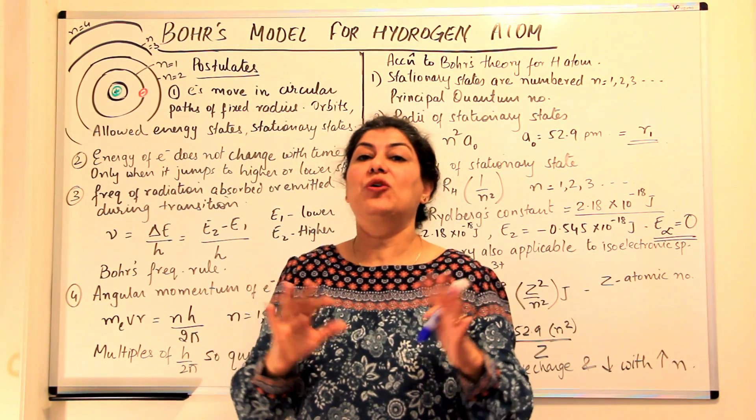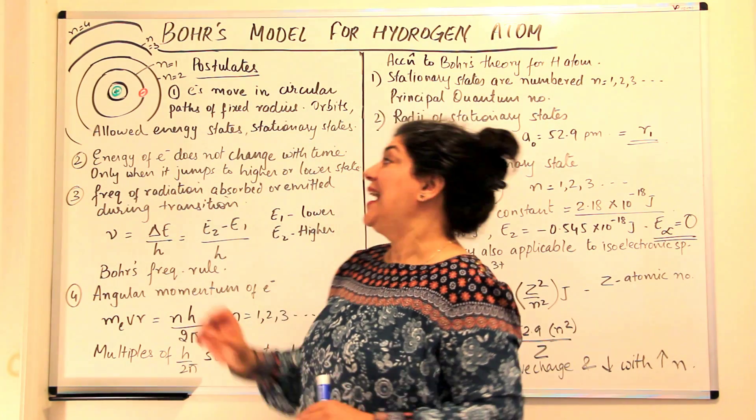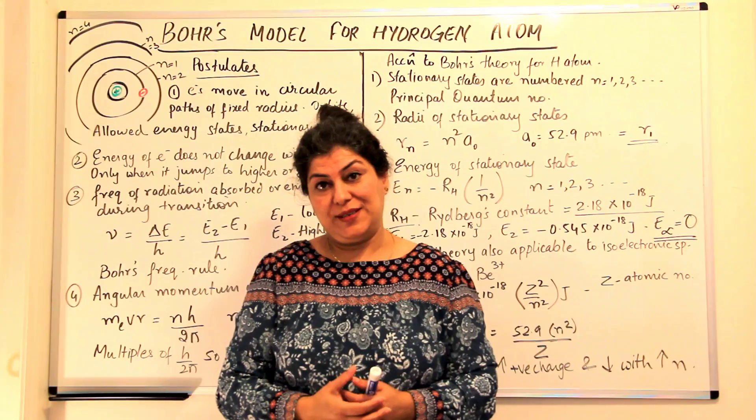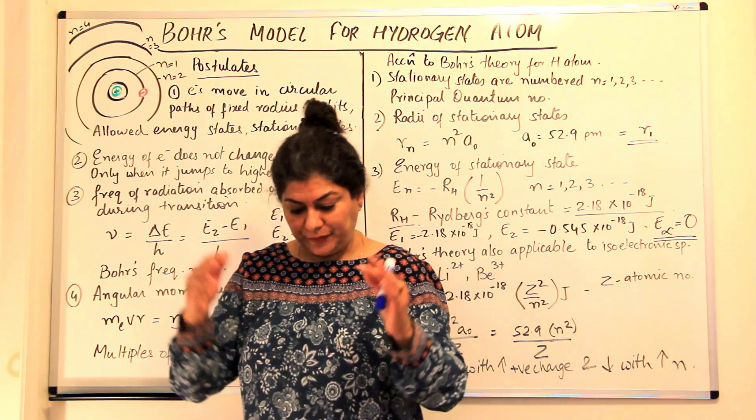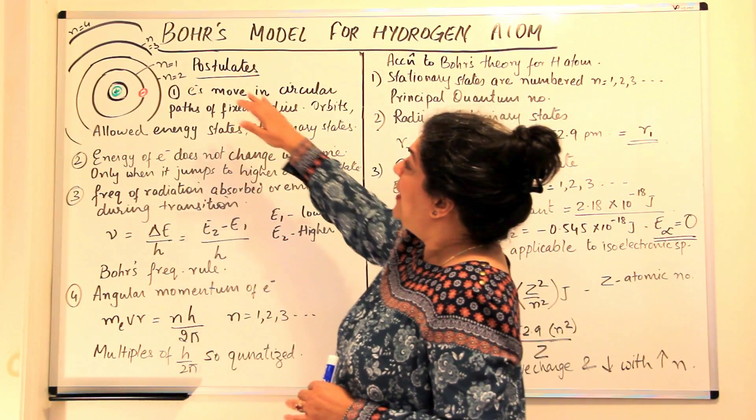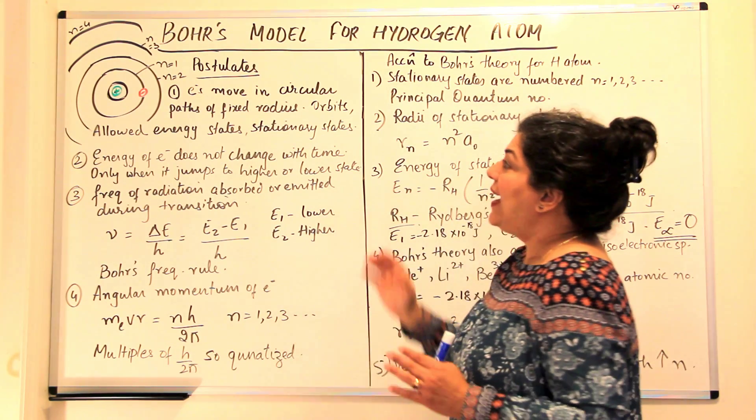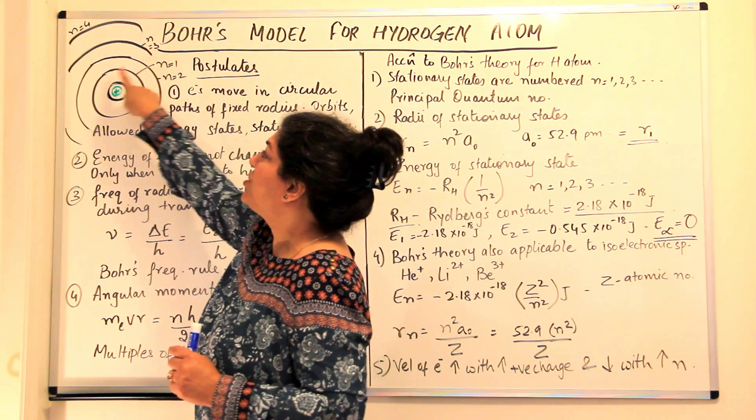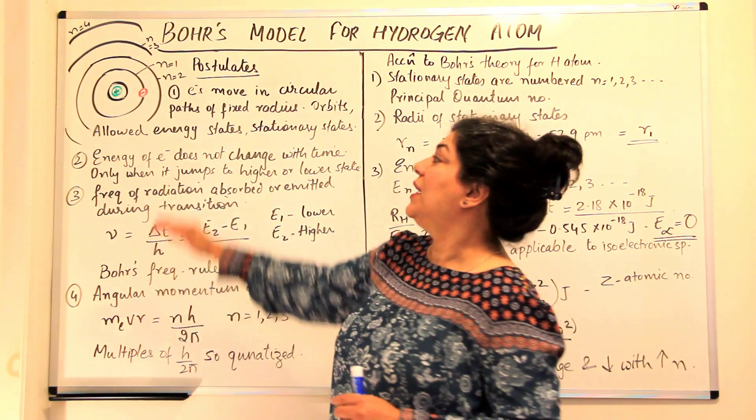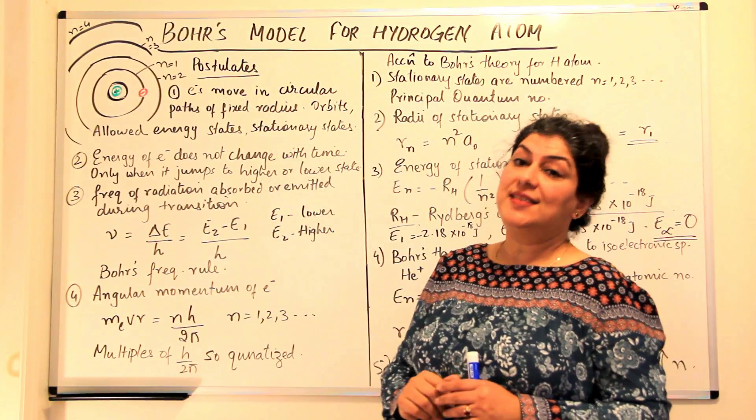As long as it is not losing or gaining energy, that is an allowed orbit, that is an allowed energy state and the electron therefore does not fall into the nucleus. So this was the explanation given by him. He said that electrons move in circular paths of fixed radius and these circular paths of fixed radius around the nucleus are called orbits. They are also called allowed energy states and sometimes they are known as the stationary states.